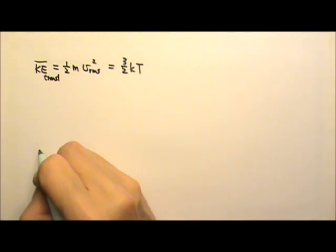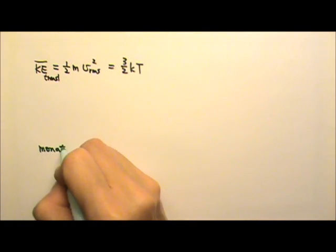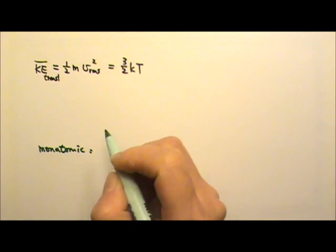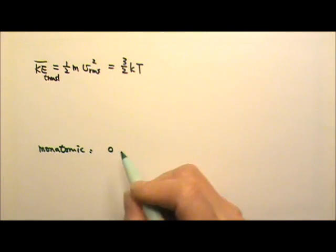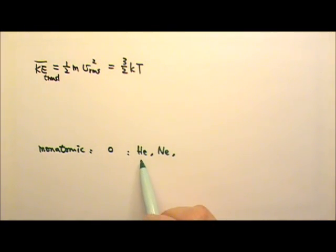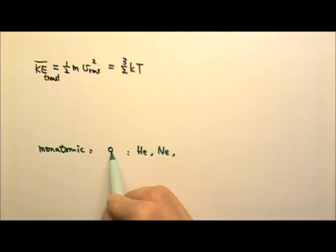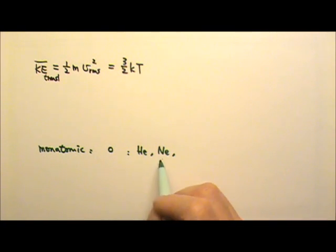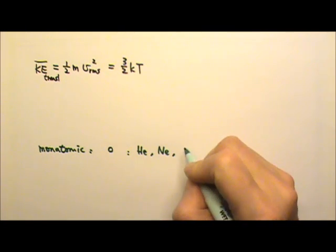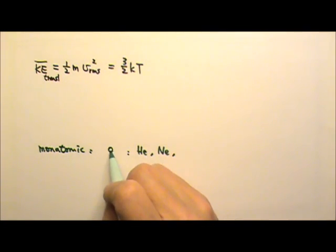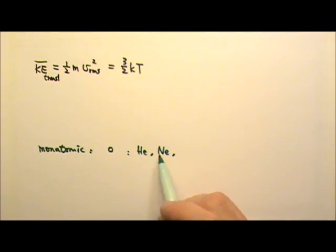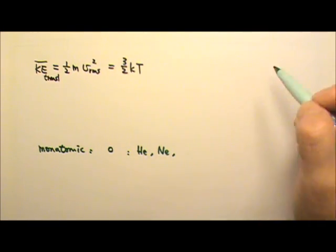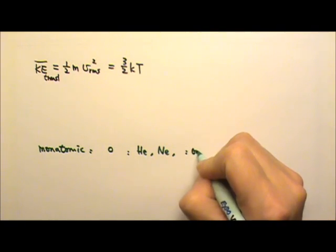If we have a monatomic ideal gas — meaning a single atom in a molecule, for example helium and neon gas — they have a single atom in one molecule, so they are monatomic gas. If you only have one atom in a molecule, they would only move around and have translational motion only.